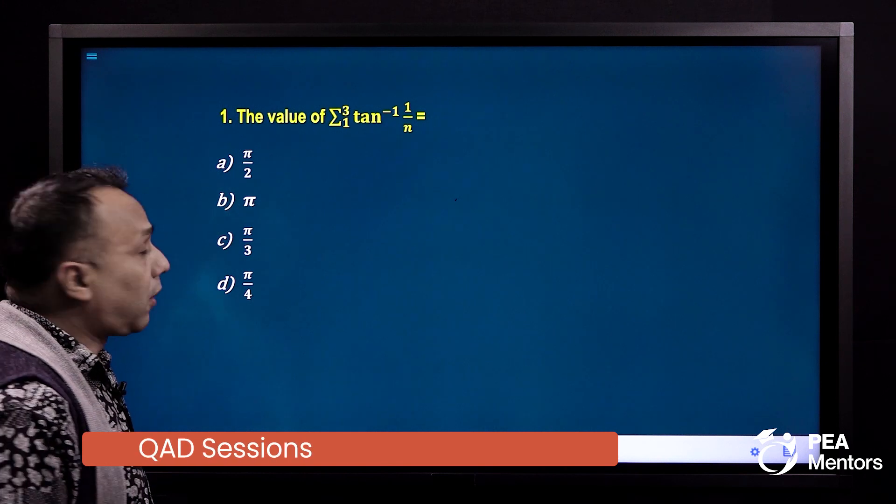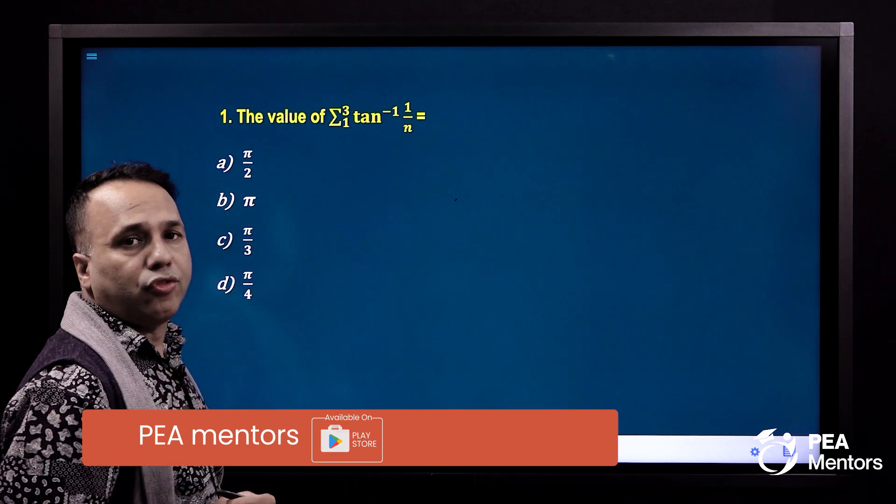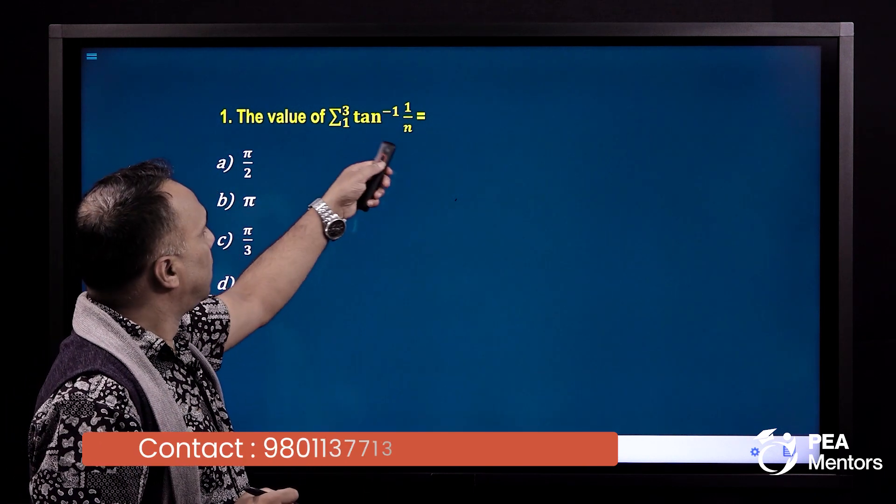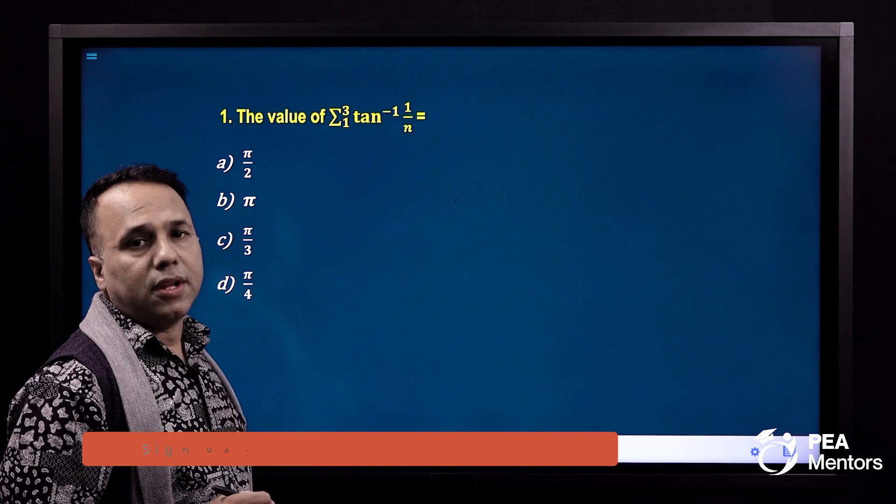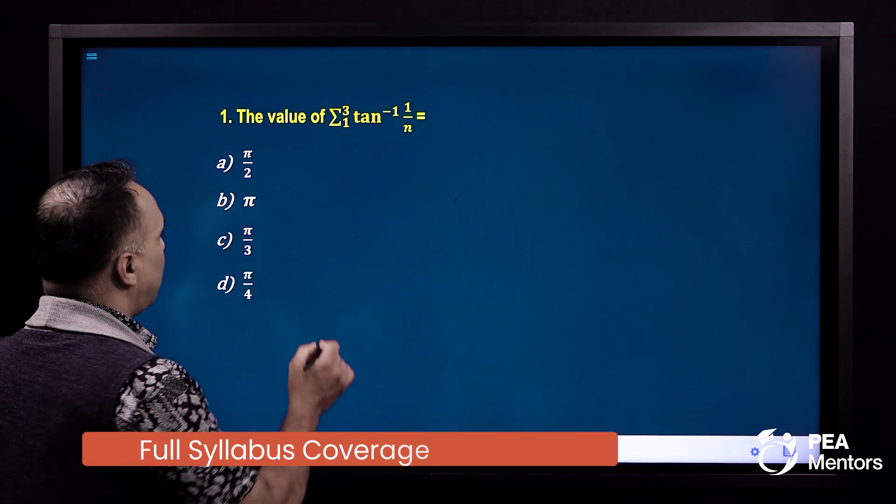Summation ko meaning kya ho? Add garni. Pahila n ko dha ma 1 rakhdi ho? tan inverse 1 upon 1 bane 1 plus 2 rakhha. tan inverse 1 by 2 plus 3 rakhha. tan inverse 1 by 3.